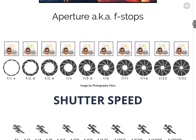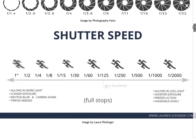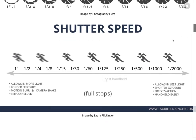Next, shutter speed. Shutter speed is how fast the shutter on your camera is opening up. When it opens really fast, it's letting less light into the camera. When it opens slower, it's letting in more light. The markings here mean: one second — that's a pretty long exposure — half a second, quarter of a second, eighth of a second, all the way to one five-hundredth, one thousandth, one two-thousandth of a second. These are all fractions, so one second is a lot longer than one two-thousandth of a second.